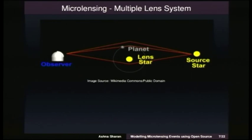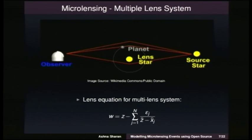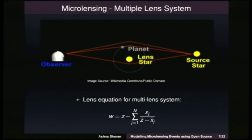For multiple lens systems geometry, with a planet companion to the lens star, we generalize the lens equation to a complex coordinate system where we have w's and z's — the source and image positions respectively. That's what you need to know, and we'll be using this equation later on in modeling.